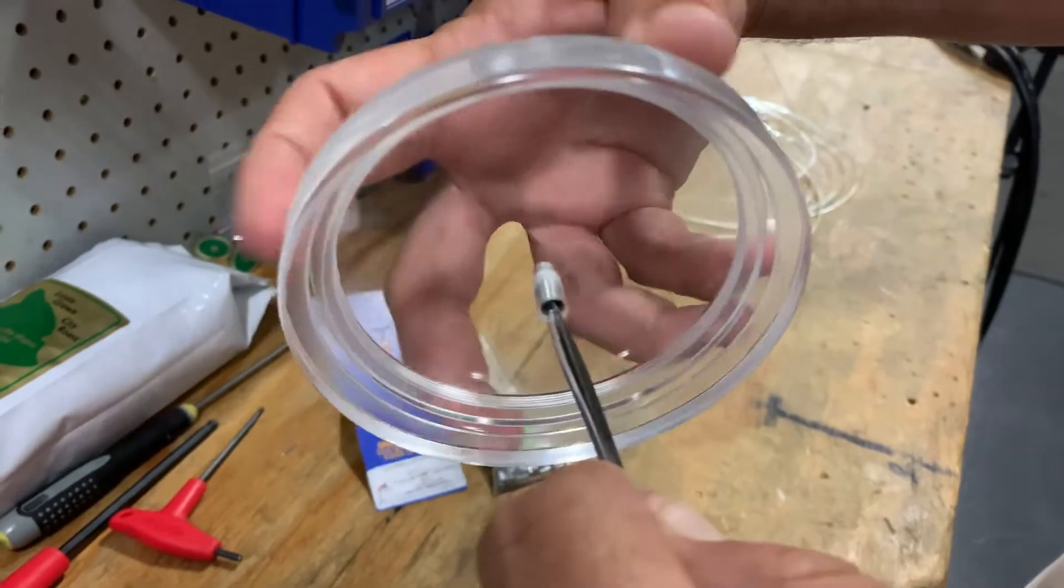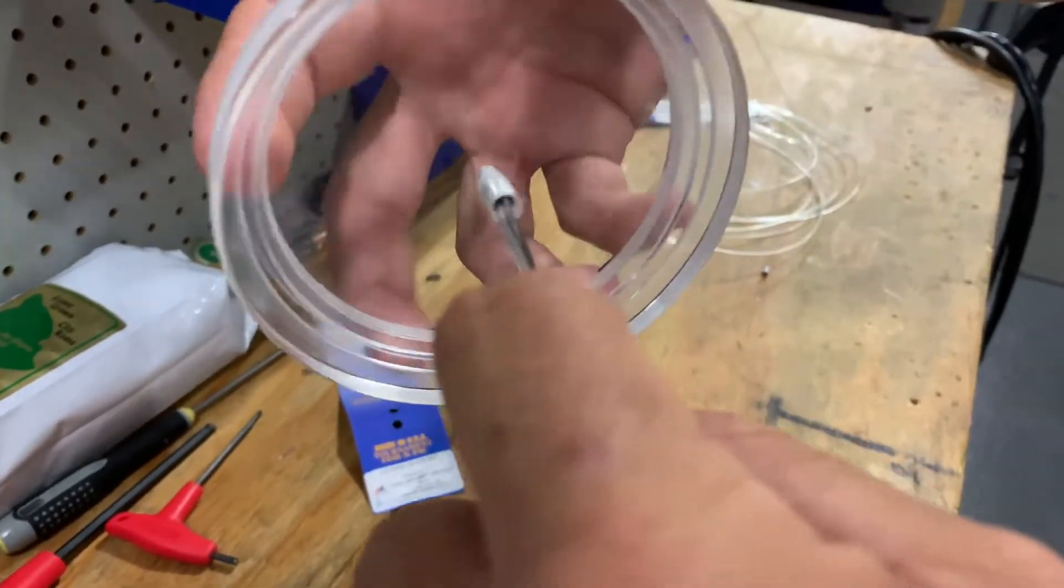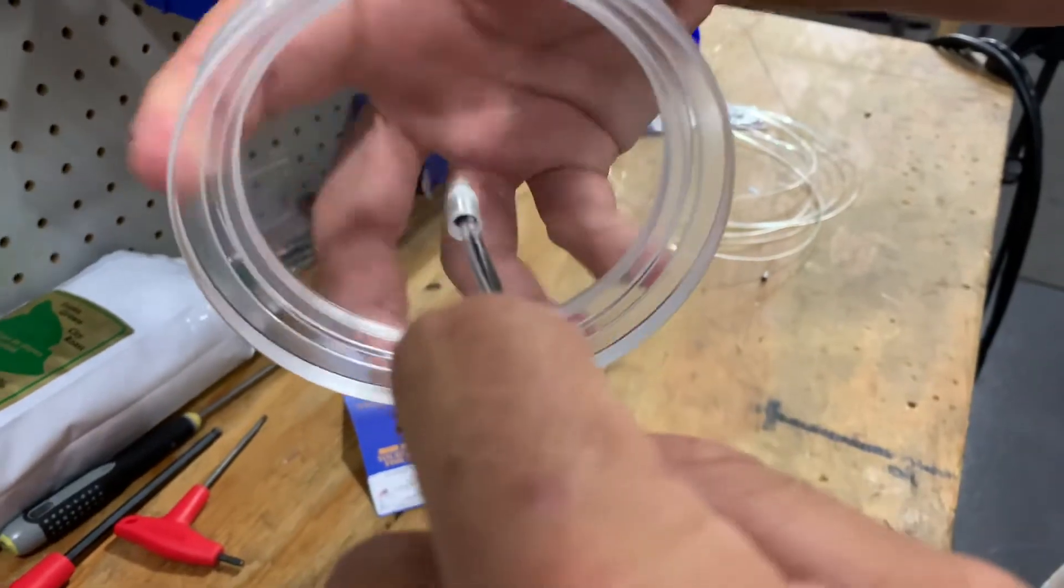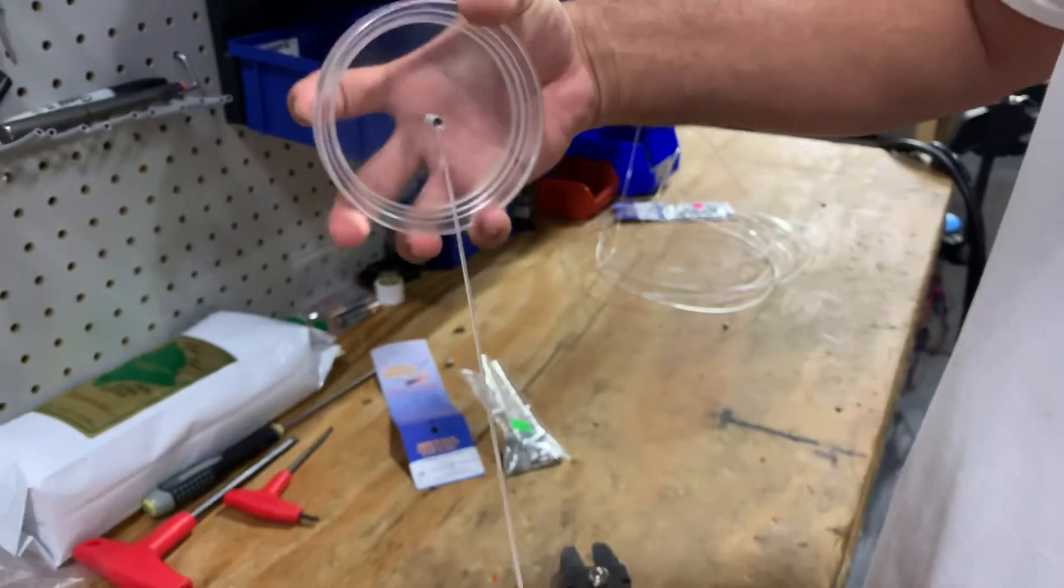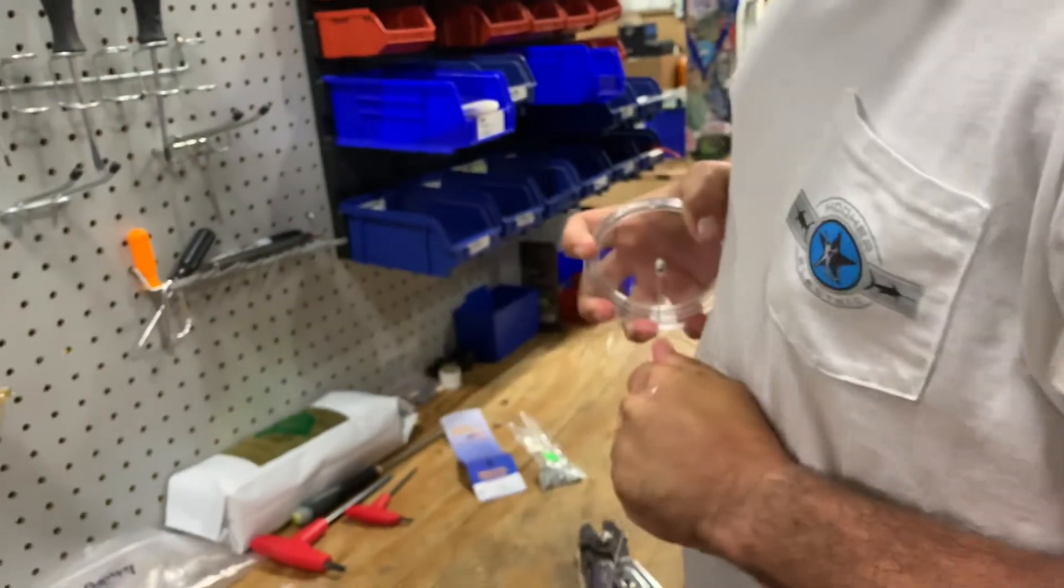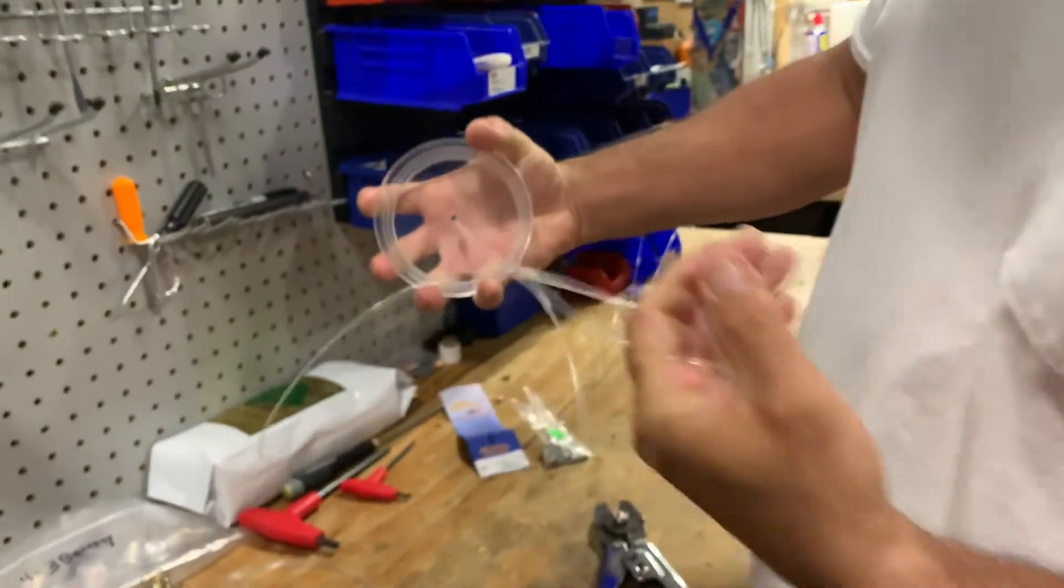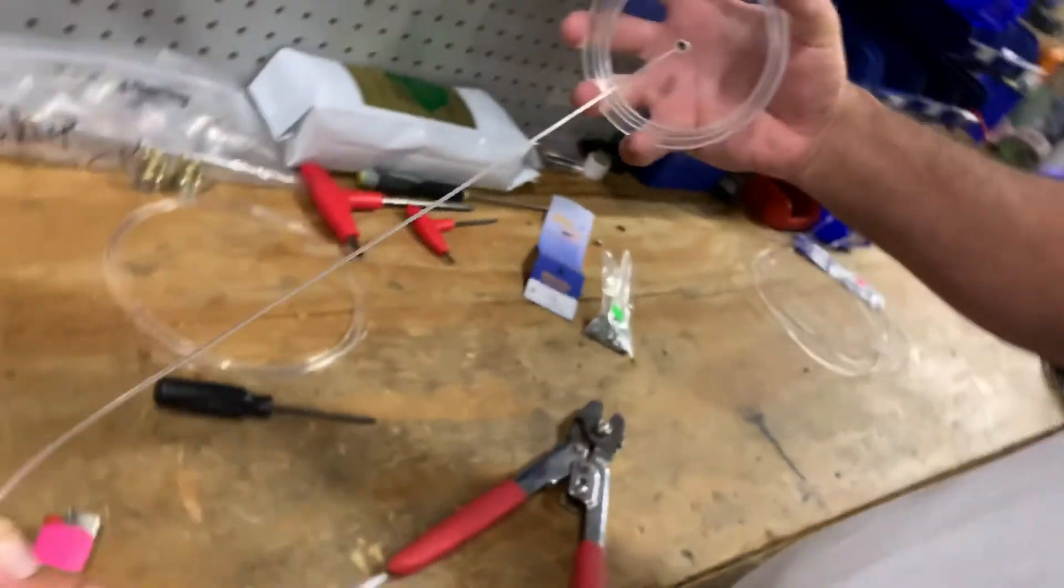There you go, you're ready to go. Take a couple wraps. That's not going anywhere, and that's how to change out the monofilament line on your deep water camera housing.